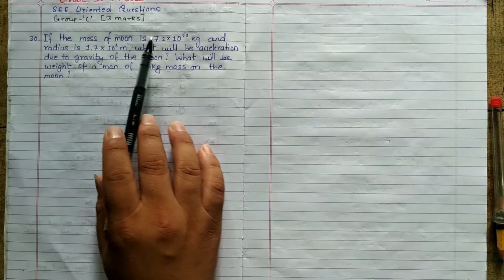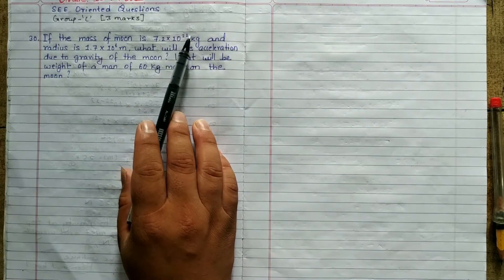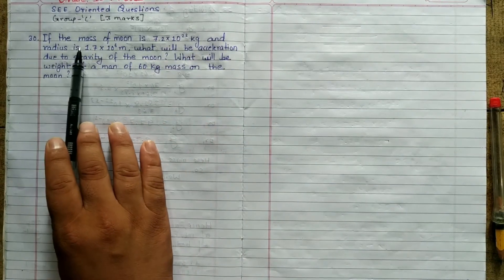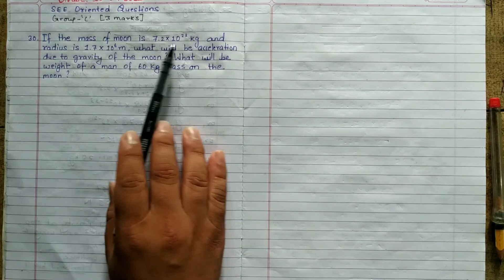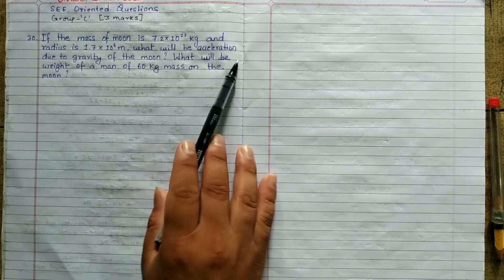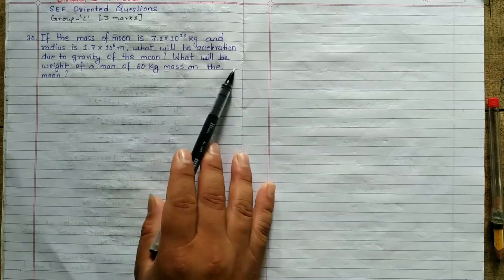If the mass of moon is 7.2 × 10^22 kg and radius is 1.7 × 10^6 meter, what will be the acceleration due to gravity of the moon? What will be the weight of a man of 60 kg mass on the moon?